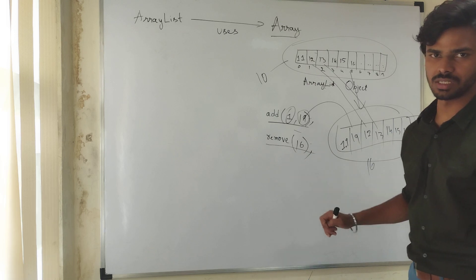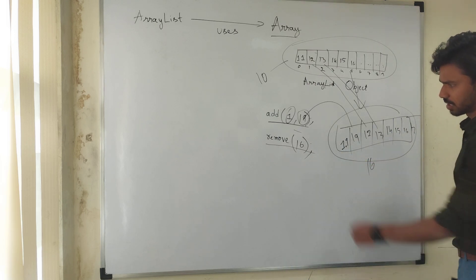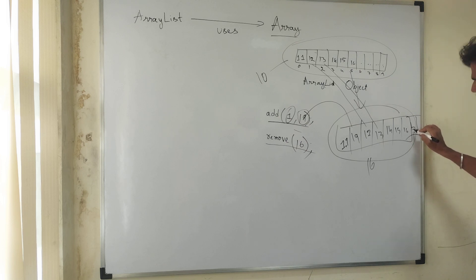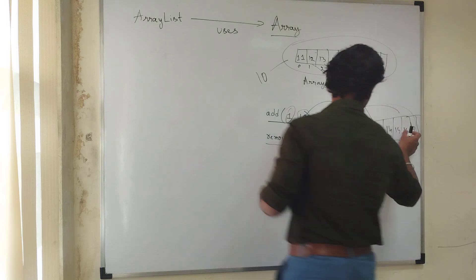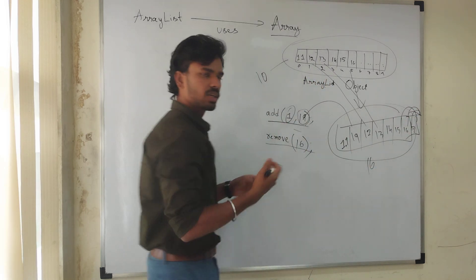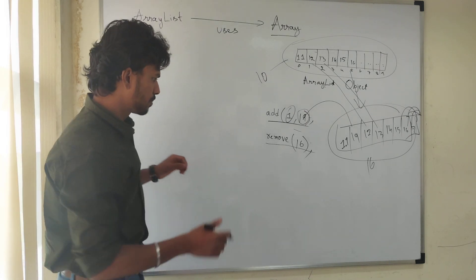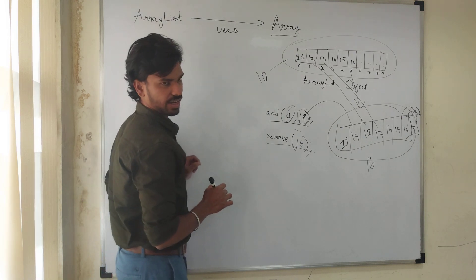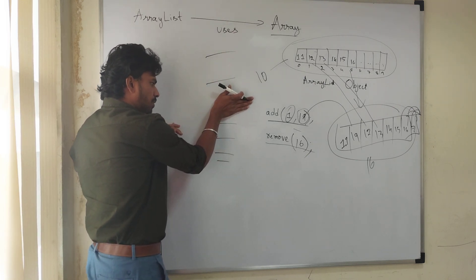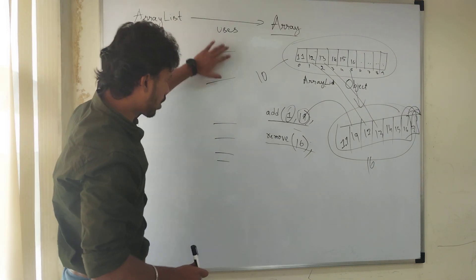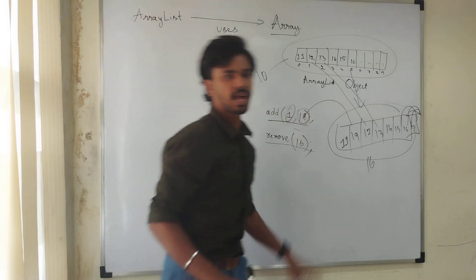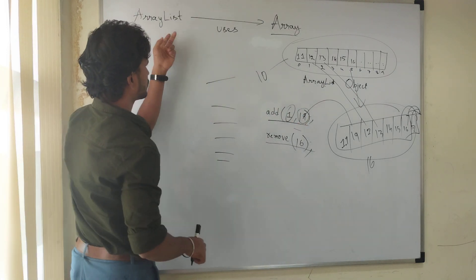When we perform a remove operation — say removing the object with value 16 — 16 is in between and there are other objects after it. When we remove that object, all the elements that are forward will be shuffled toward the backward side. All the elements inside the array are stored as a continuous sequence, so if we remove one object in between, the remaining objects shift to occupy the previous spaces.